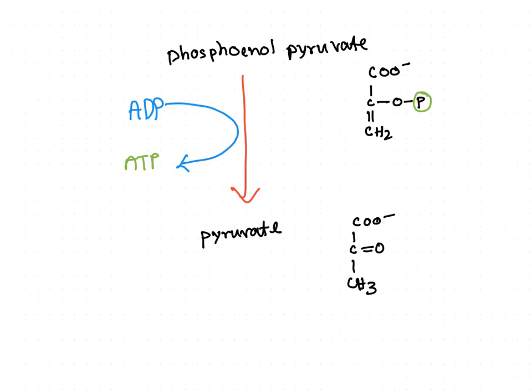Substrate-level phosphorylation is a key mechanism by which ATP is generated. Notably, cancer cells and stem cells use this mechanism for their energy needs and do not prefer other pathways like the Krebs cycle, respiration, or the oxidative phosphorylation pathway. They are solely dependent on glycolytic pathways for energy — this will be discussed further in a later video.